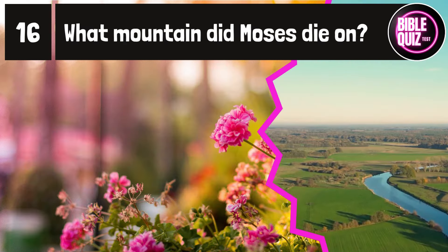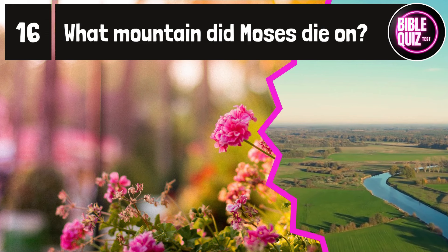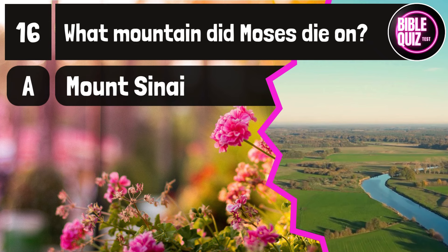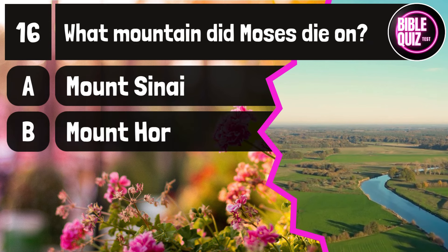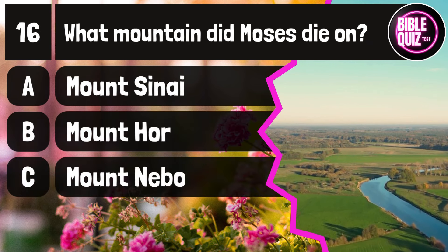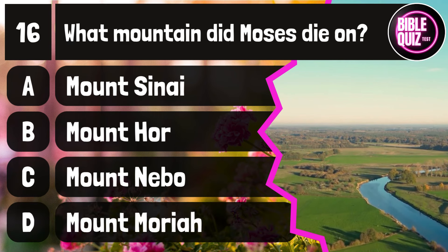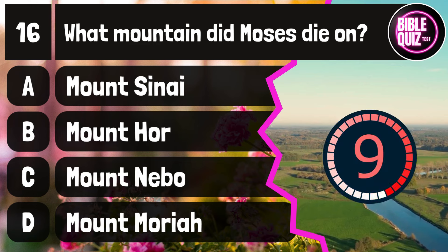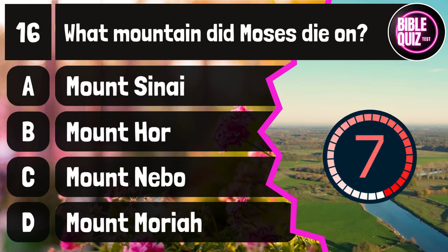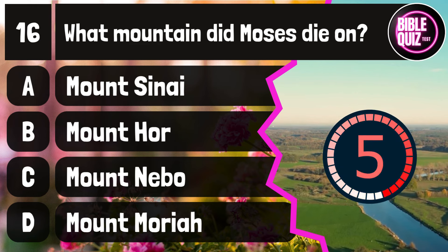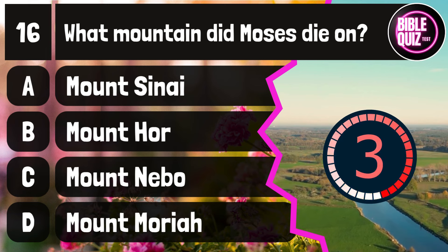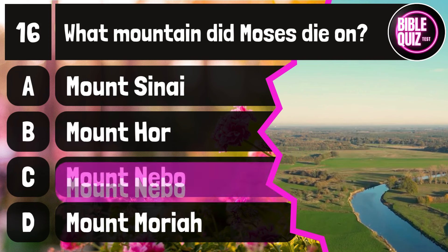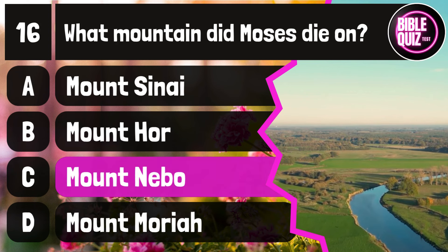Question number 16. What mountain did Moses die on? Option A: Mount Sinai. Option B: Mount Hor. Option C: Mount Nebo. Option D: Mount Moria. Time to think. The answer is option C: Mount Nebo.